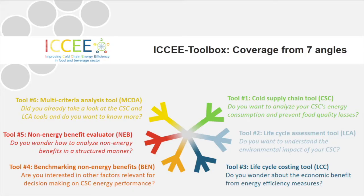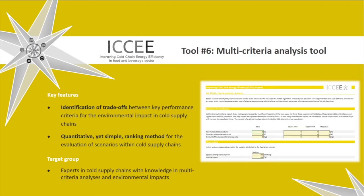The sixth tool is mainly for experts. It combines the cold supply chain tool, the life cycle assessment tool, and a multi-criteria evaluation method to understand modifications of input parameters on environmental performance. More specifically, it helps you understand the impact of adjusting temperature and storage levels on five of the main impact criteria used in life cycle analysis. You may select different weights for the impact categories and then carry out an automated multi-criteria assessment.